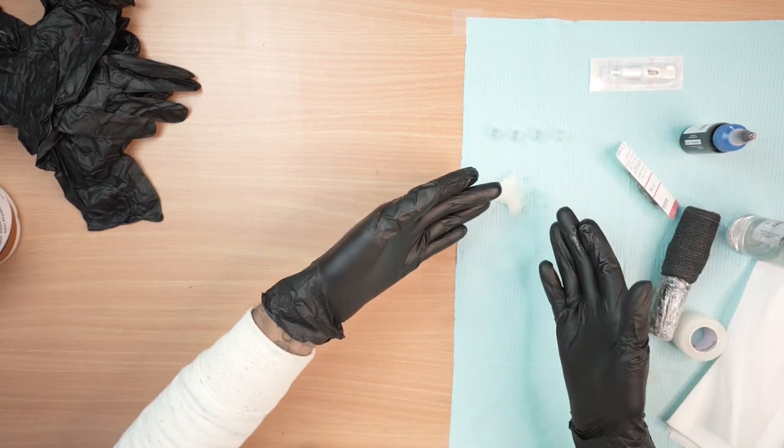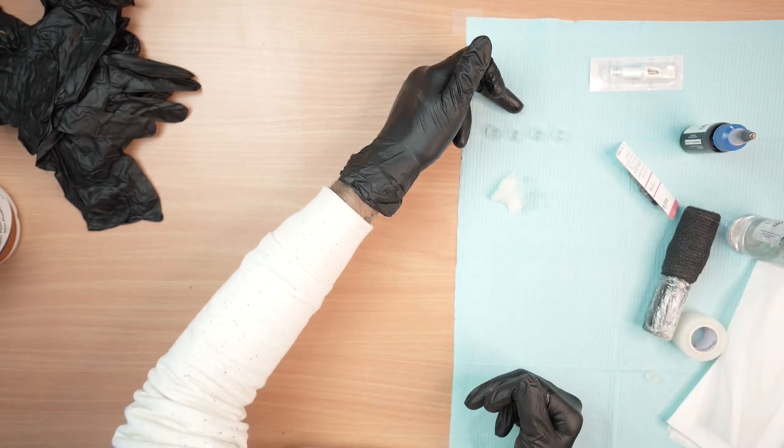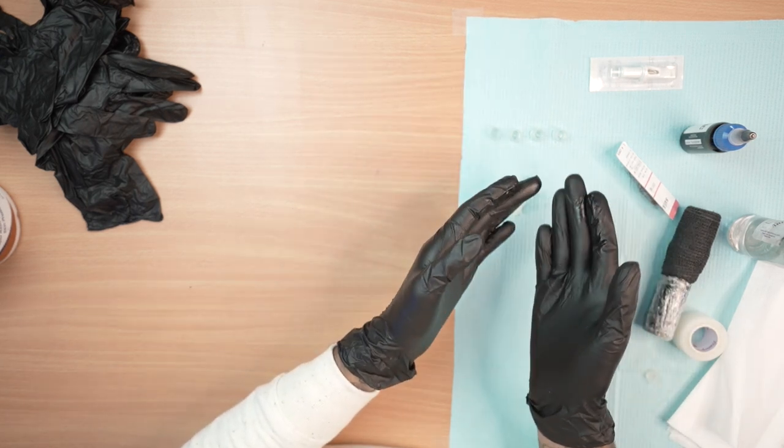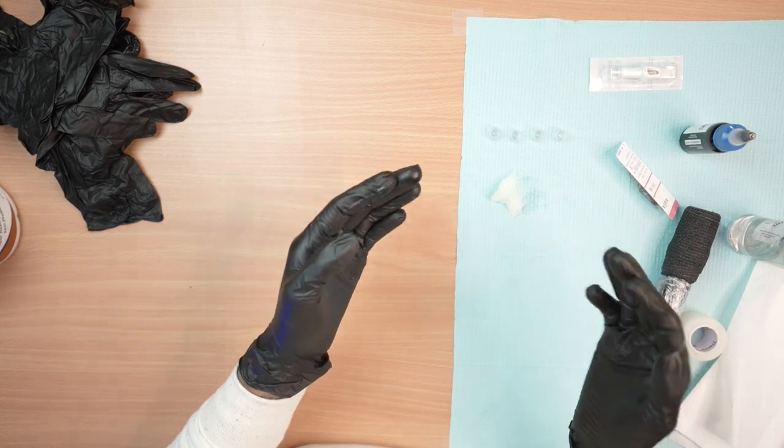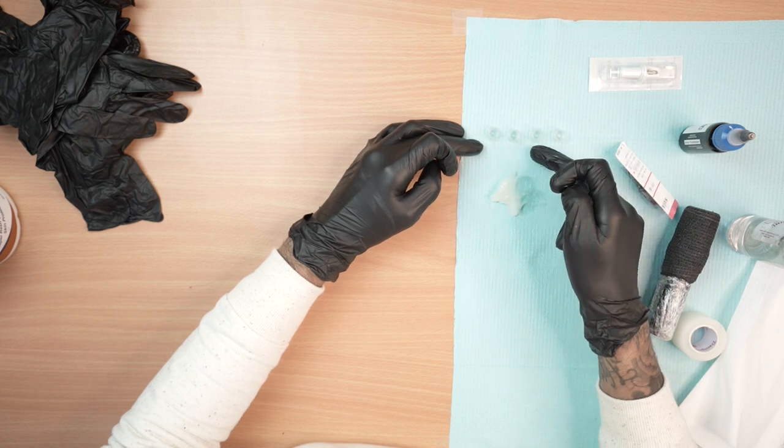So here I have my four ink cups. I will do 100% black, then 70%, 40%, and then 10% or 20%. I will use a drop system and keep a particular percentage. So basically, my tones would be black, dark, medium, light.